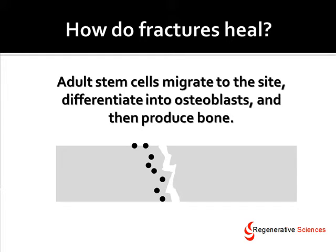How do fractures heal? That's really the important question if we're going to be discussing fracture nonunion. Fractures heal by adult stem cells migrating to the site, differentiating into osteoblasts, and then those osteoblasts producing bone. Basically, you have adult stem cells that are located in your bone marrow and in the periosteum, or on the outer side of the bone.